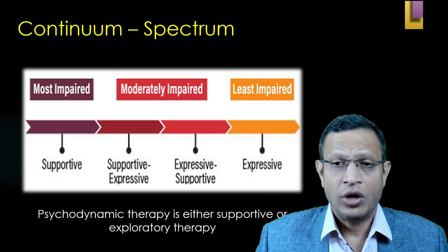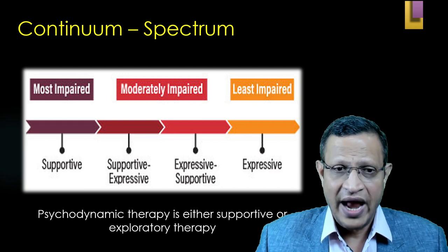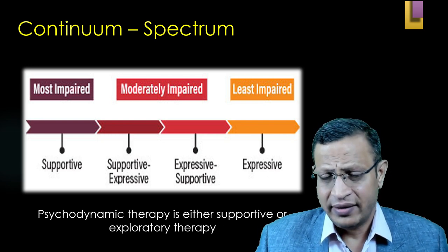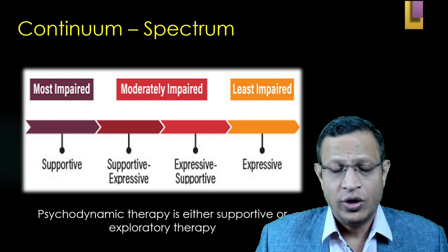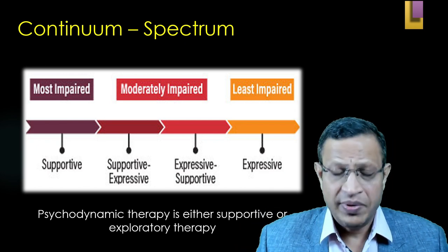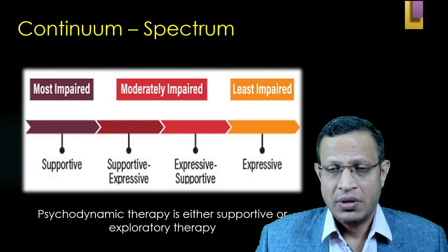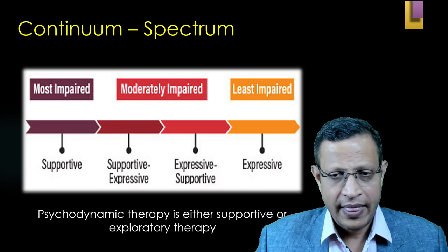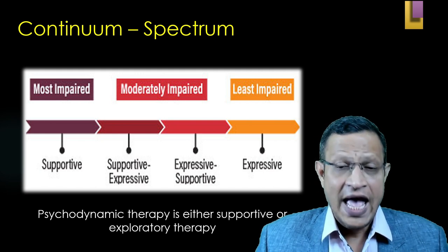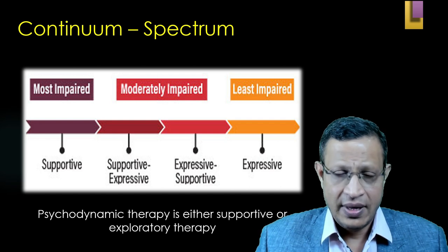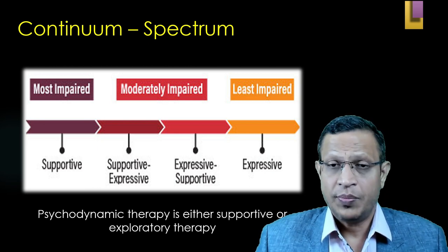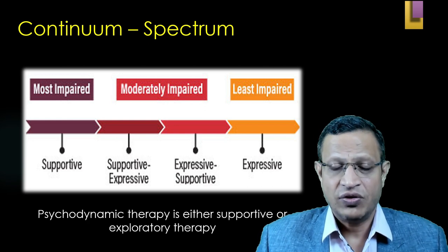Looking at the continuum of supportive psychotherapy: on one end are patients who are most impaired — where psychic structures like ego defense mechanisms are very poor and fragile with severe symptoms — and that is where supportive psychotherapy is required. On the other end, where the patient is well-preserved, expressive psychodynamic psychotherapy is used. However, most patients don't fit into a straight jacket; you may start with supportive psychotherapy and shift to expressive psychotherapy as the patient builds skills.